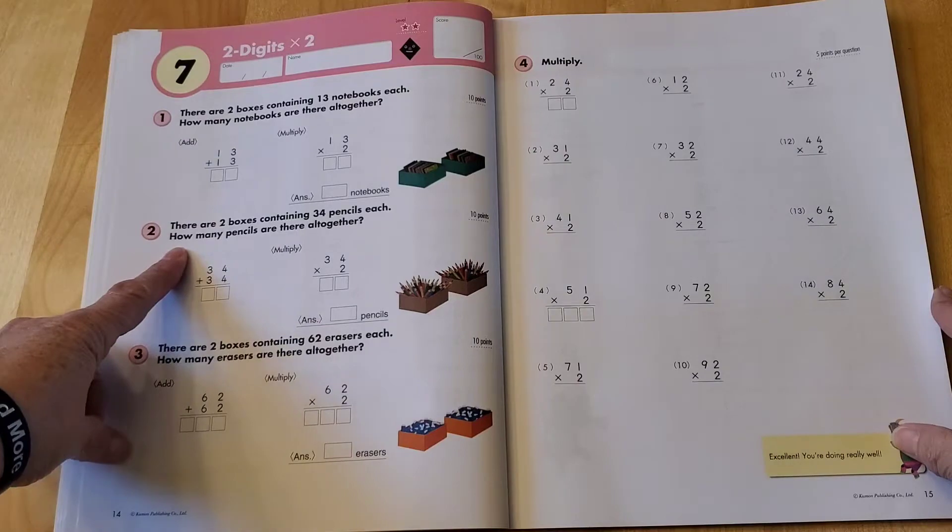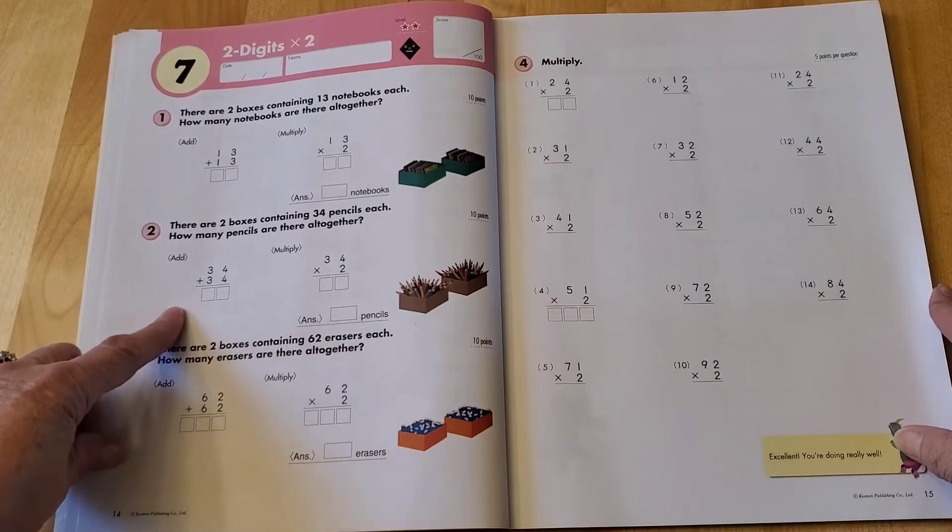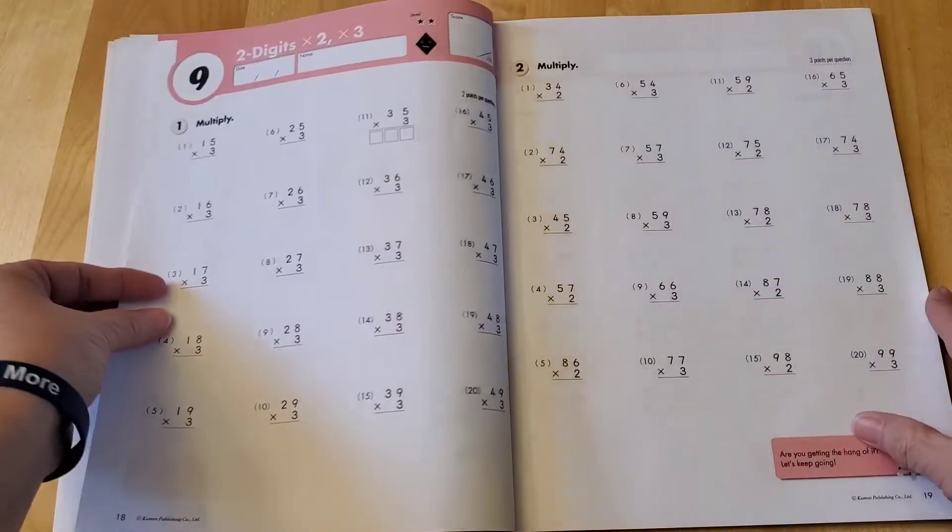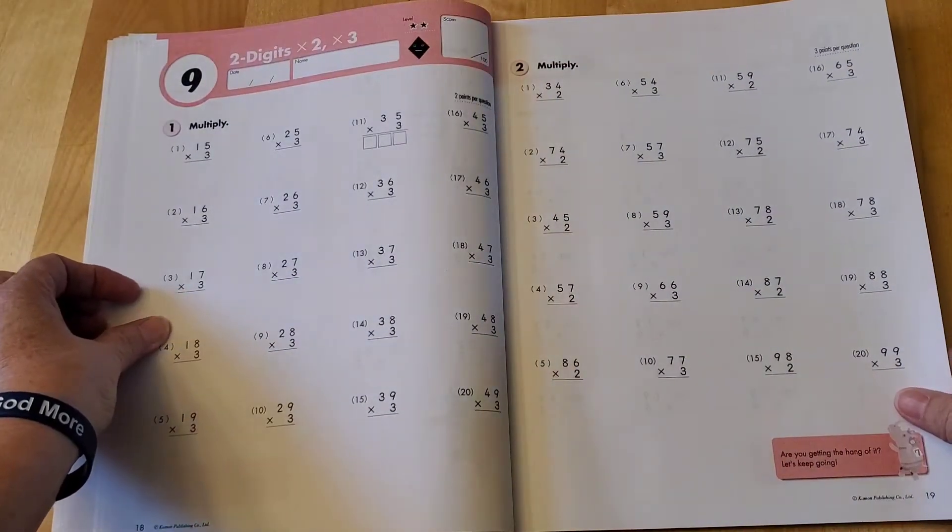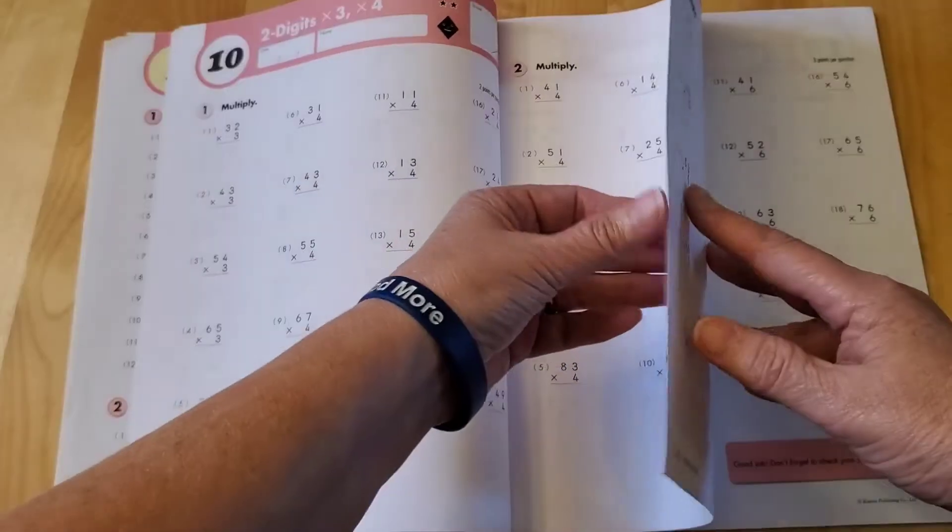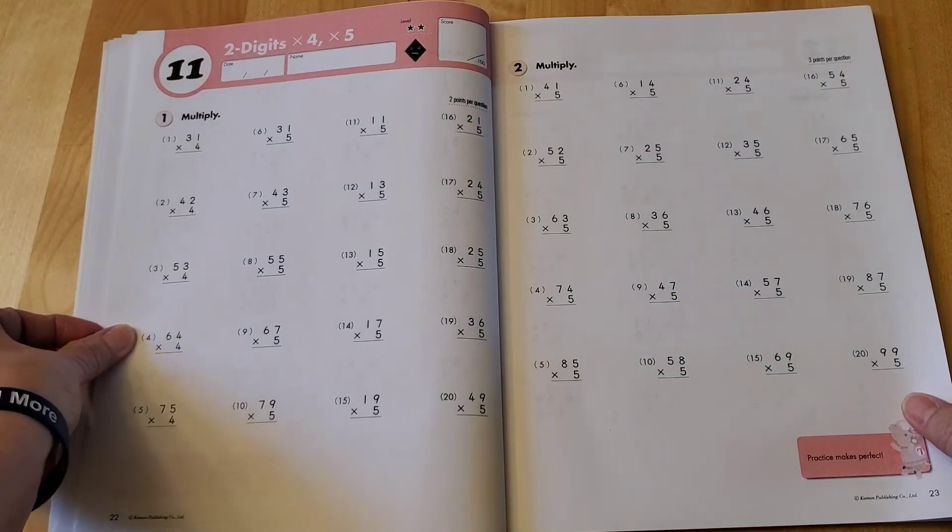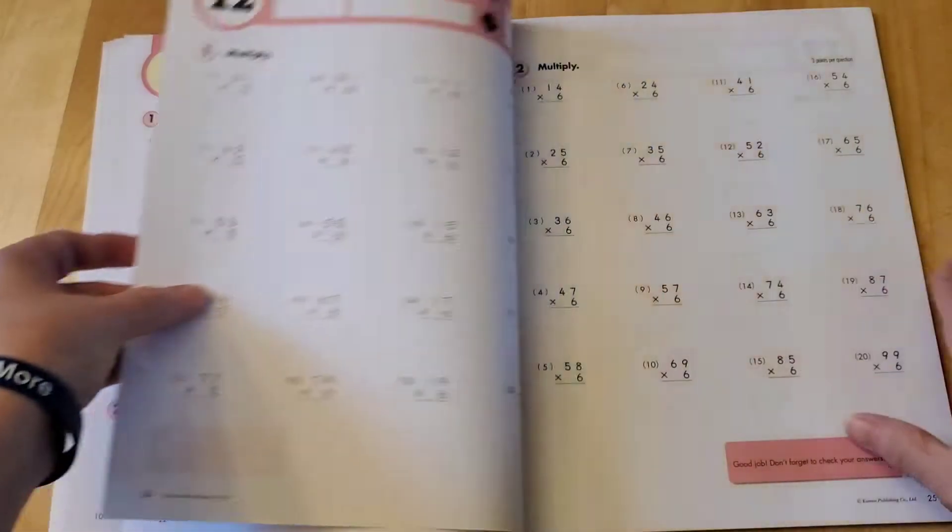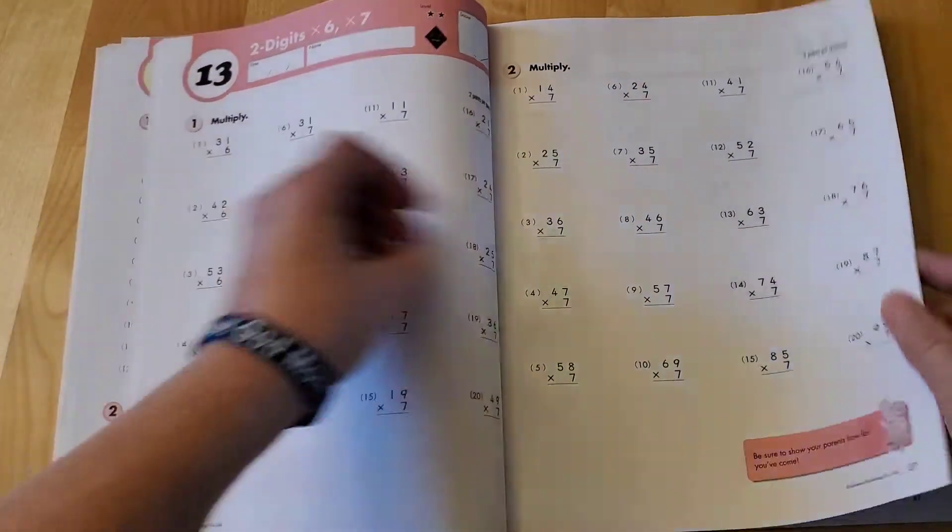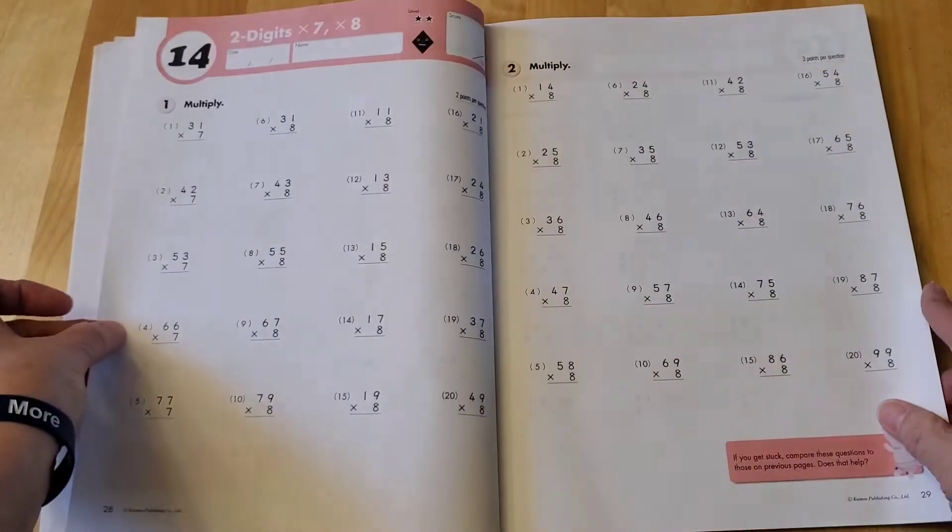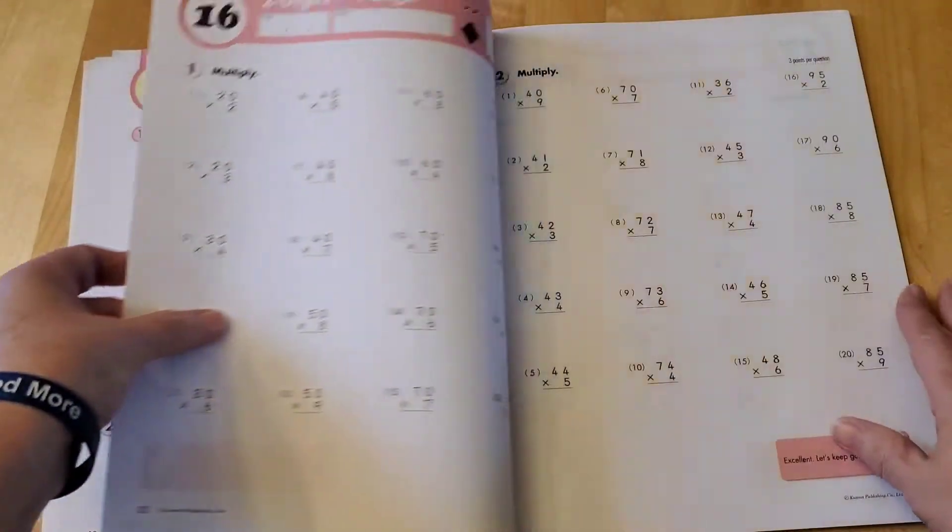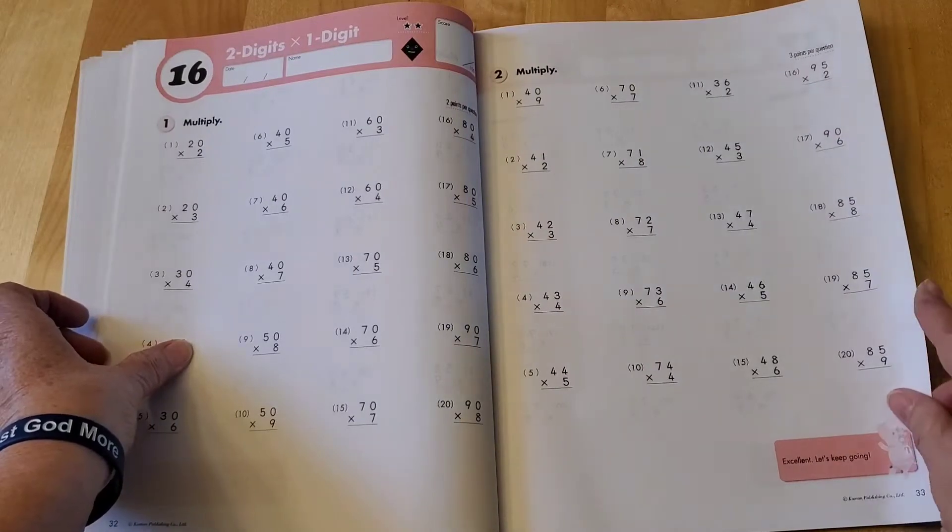And then it starts into two digits times two, two digits times three, two digits times two and three, two digits times three and times four, times four and times five, five and six, six and seven, seven and eight, eight and nine, and then times one.